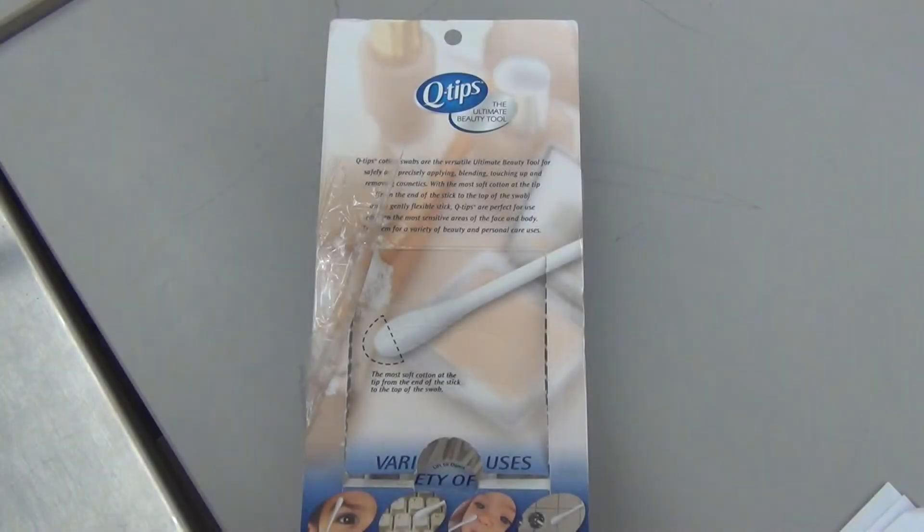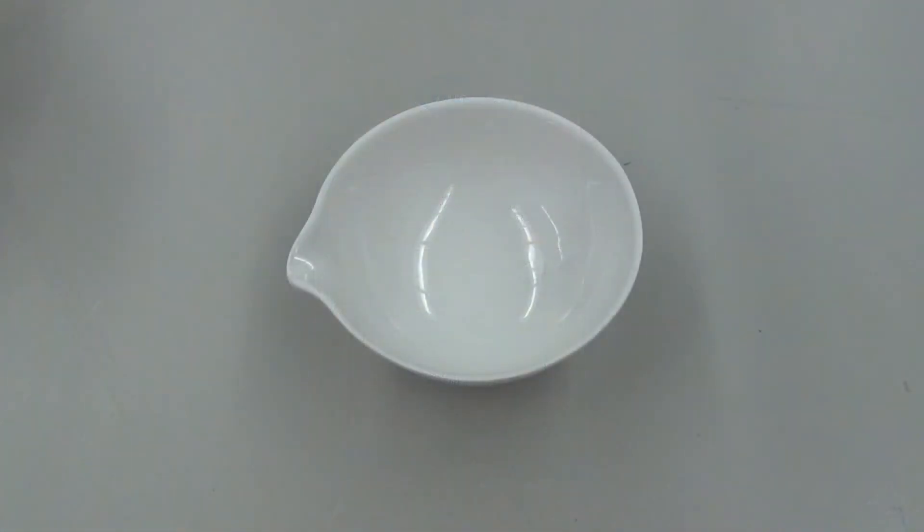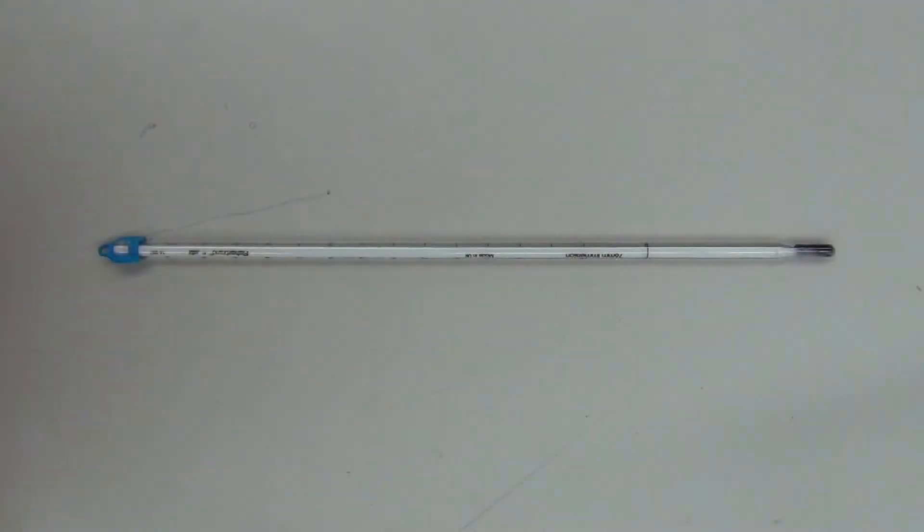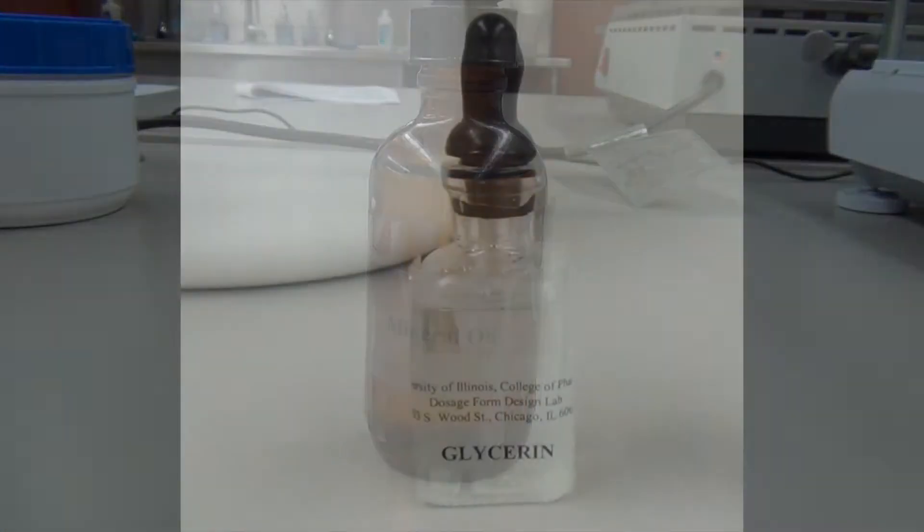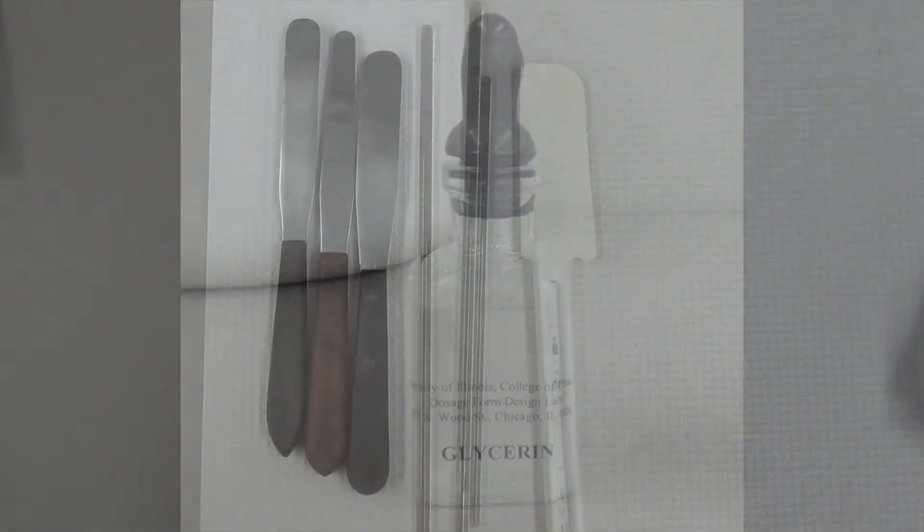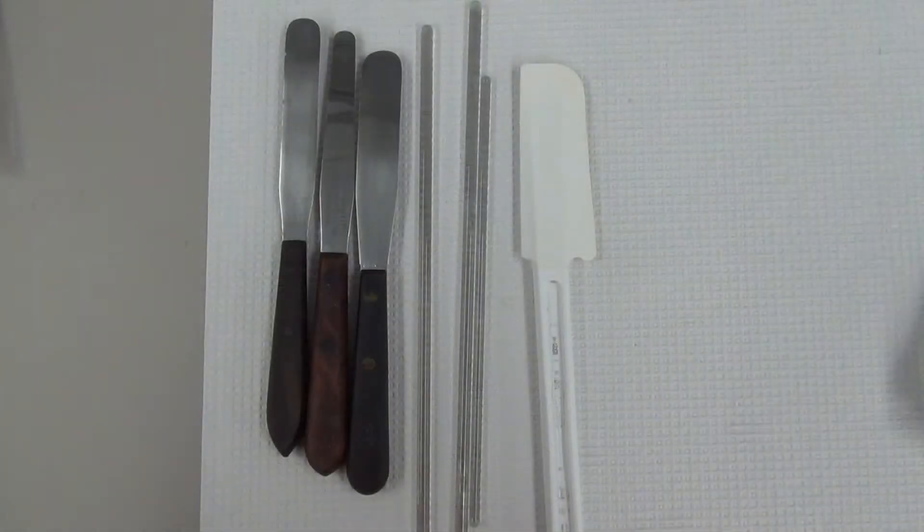The first thing you are going to want to do is gather all of your materials. You will need q-tips, an evaporating dish, a glass thermometer, mineral oil, glycerin, a rubber spatula, metal spatulas, and glass stirring rods.